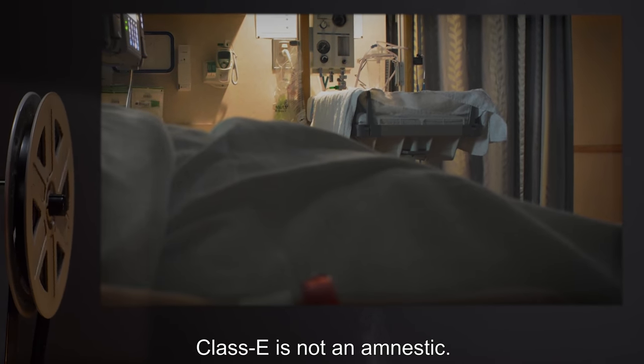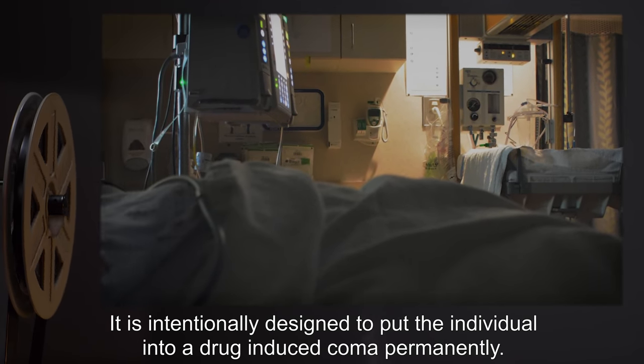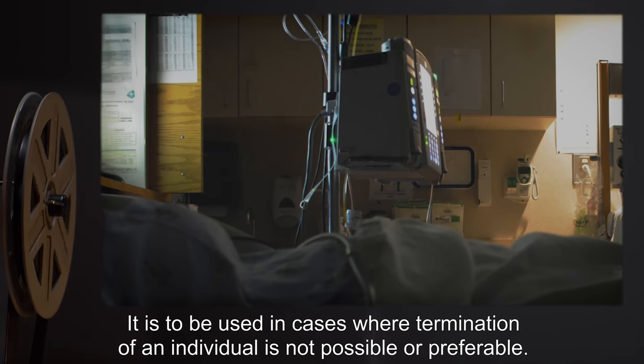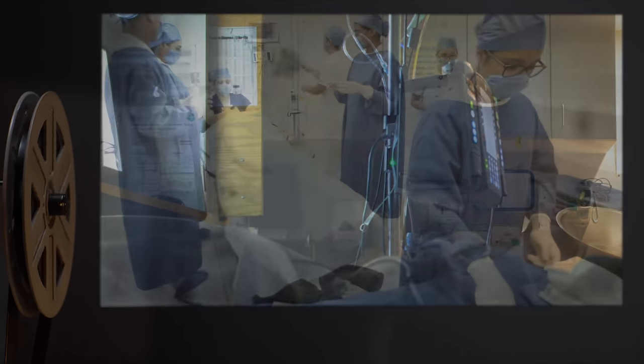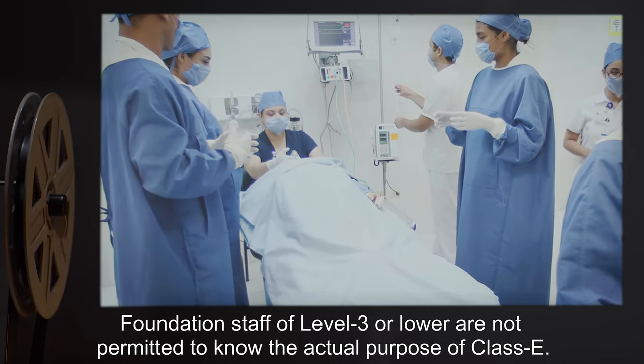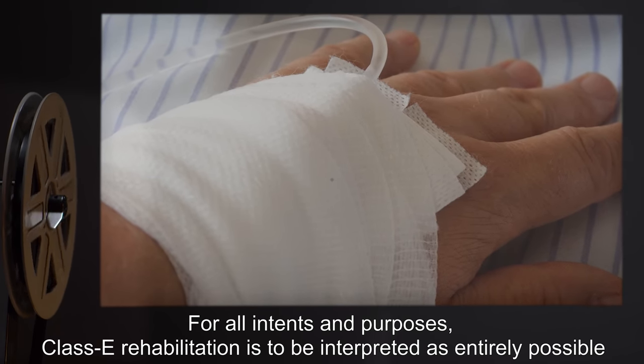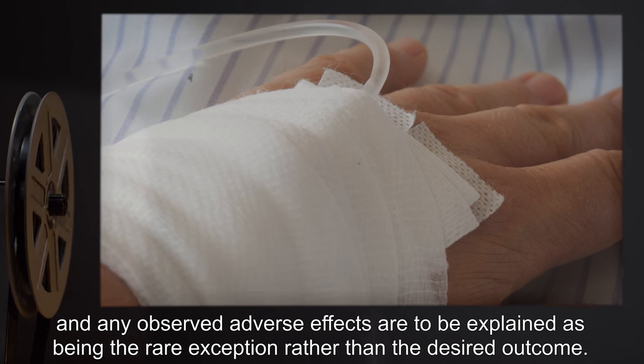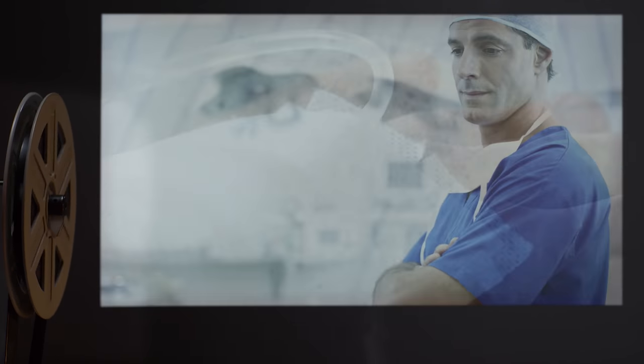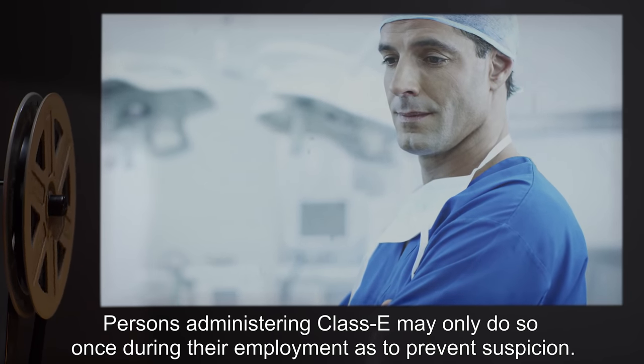Class E is not an amnestic. It is intentionally designed to put the individual into a drug-induced coma permanently. It is to be used in cases where termination of an individual is not possible or preferable. Foundation staff of Level 3 or lower are not permitted to know the actual purpose of Class E. For all intents and purposes, Class E rehabilitation is to be interpreted as entirely possible and any observed adverse effects are to be explained as being the rare exception rather than the desired outcome. Persons administering Class E may only do so once during their employment to prevent suspicion.